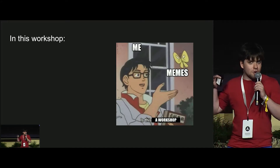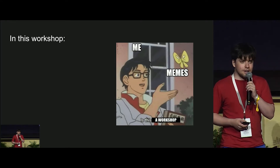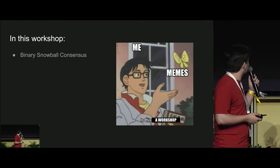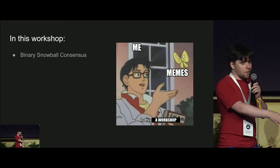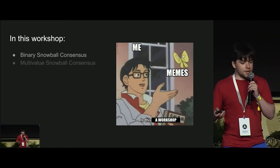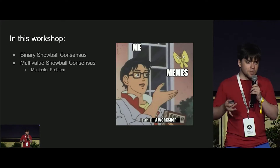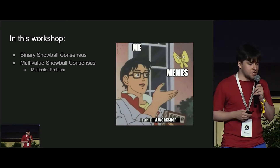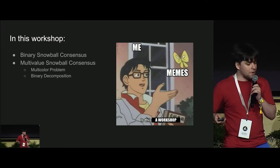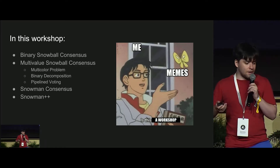In this workshop I'm going to try to pack as many memes in as possible — I think that's the most effective way of distributing information. There's also going to be a decent amount of text, so we'll see how it goes. I'm going to start off talking about binary consensus, then continue into multi-value consensus. In Avalanche, multi-value consensus is implemented differently than some naive implementations, so I'll talk about why with the multicolor problem, binary decomposition, pipeline voting, which goes through into Snowman, and finally Snowman++.